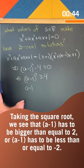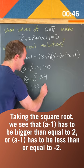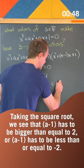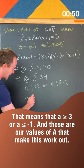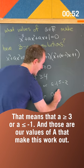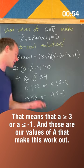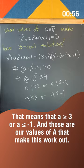Taking the square root, we see that a-1 has to be bigger than or equal to 2 or a-1 has to be less than or equal to -2. That means that a ≥ 3 or a ≤ -1, and those are our values of a that make this work out.